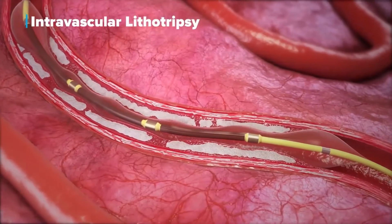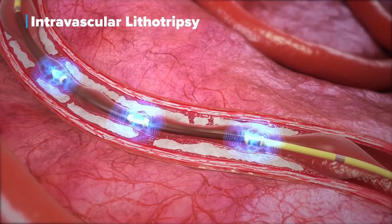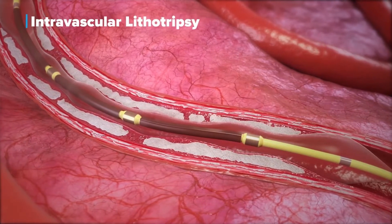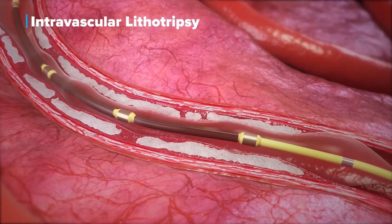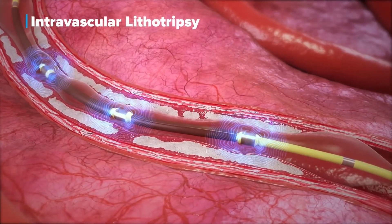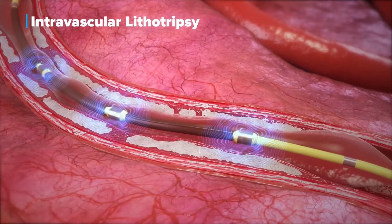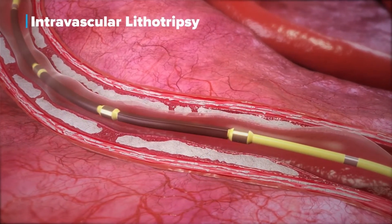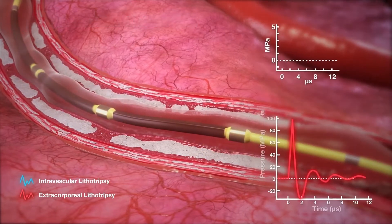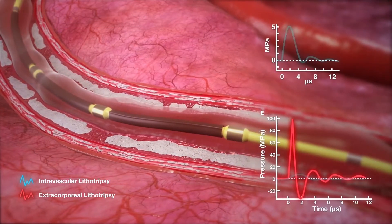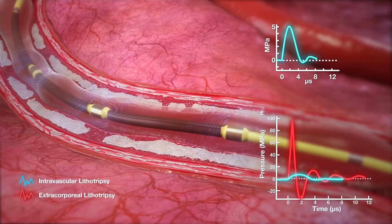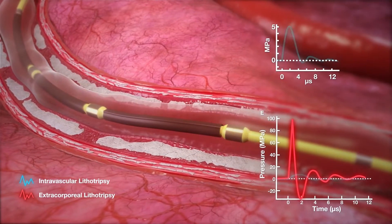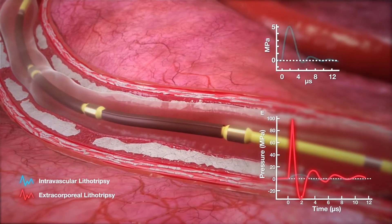IVL modifies calcium through use of shock waves, which are a specific form of sonic pressure waves. The shock wave waveform has a rapid increase of peak pressure for approximately one microsecond, followed by a small negative pressure trough. To help minimize injury to soft tissue, IVL's waveform is designed to be different than traditional lithotripsy, which has a higher peak pressure and a larger negative pressure trough.